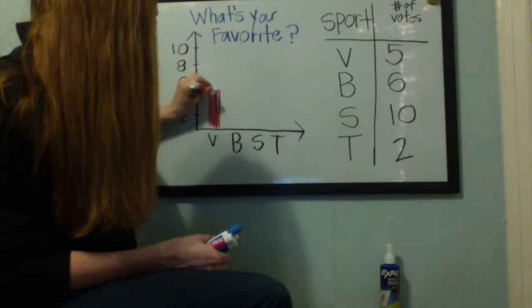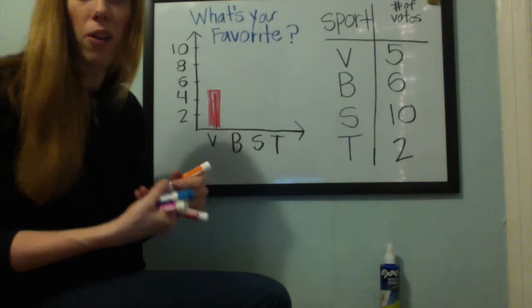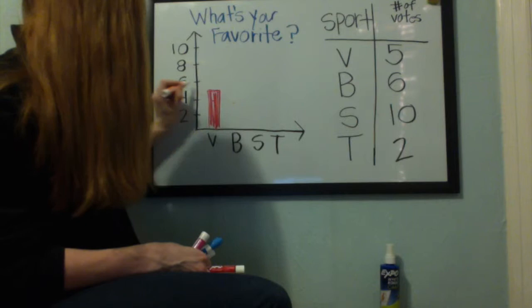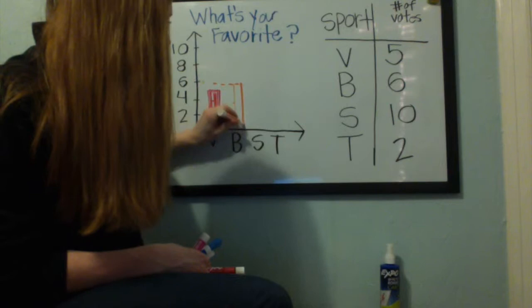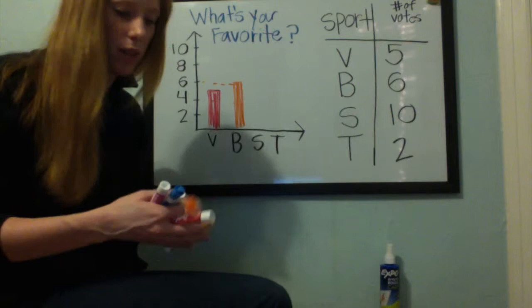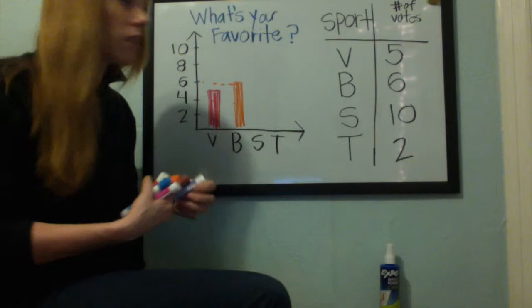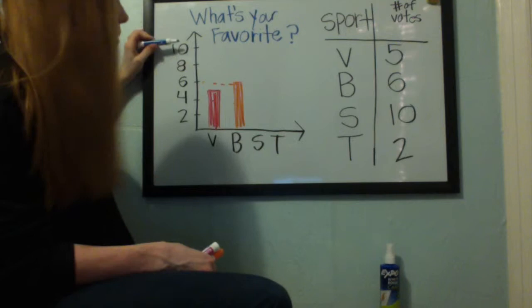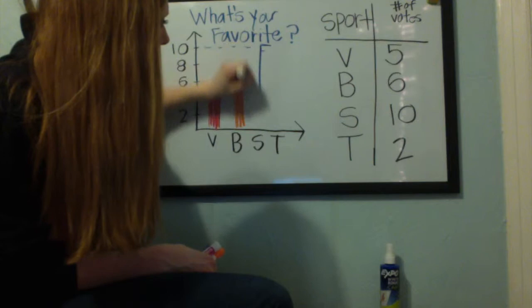Next, we see that baseball is six. Baseball, we're going to go up two, four, and all the way across here is six. We make another bar to show that six is the number of votes. Next, we're going to look at soccer, which has ten votes — looks like that was the favorite sport. We start with the y-axis at ten, and if you go all the way across, you know that the bar stops at ten votes.